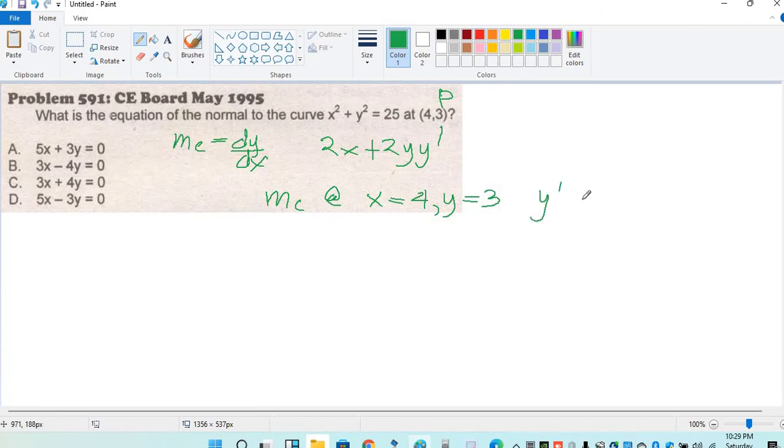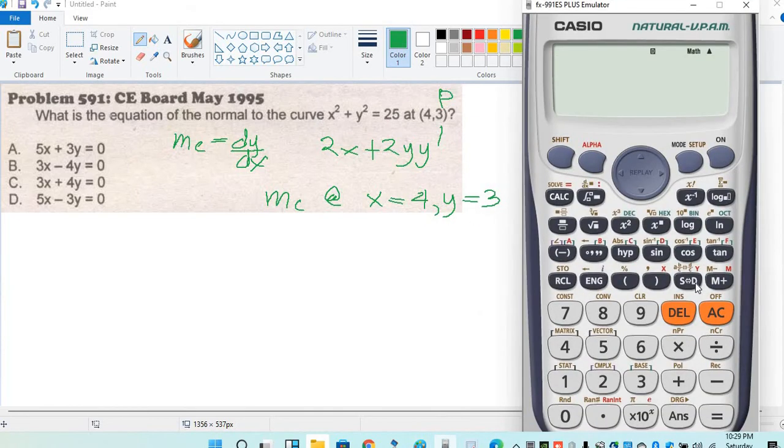Y prime becomes a, yan na yung slope. Therefore, 2x plus 2y y prime. Shift, comma, recall a, then shift solve. Ang x is 4, ang y is 3. Solve for a, yan na yung slope.